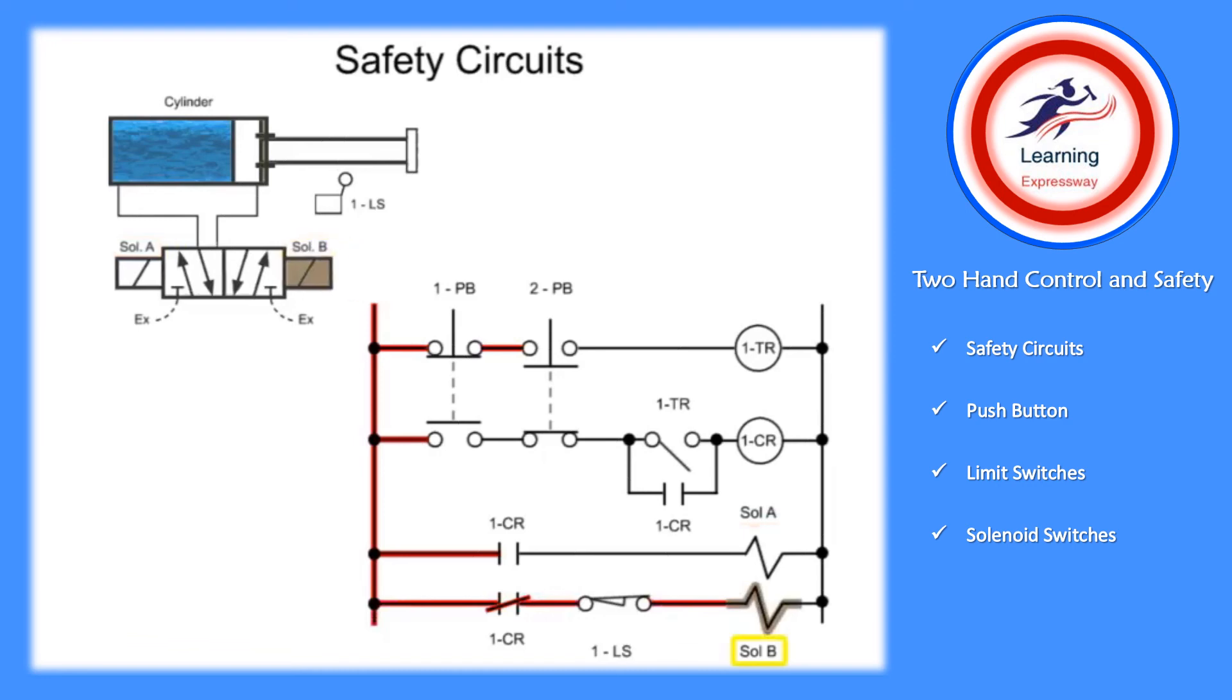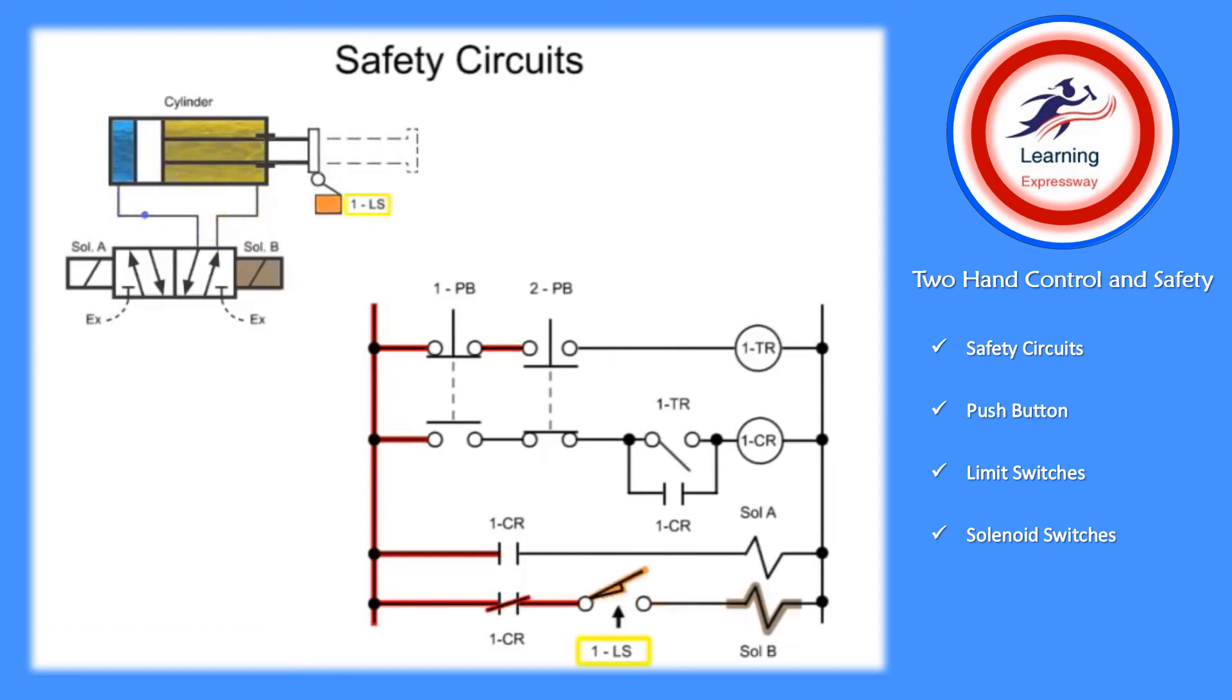This shifts the valve, allowing the rod end of the cylinder to fill with fluid and retract the cam. When the cylinder is fully retracted, the cam energizes and opens limit switch 1, which removes power from solenoid B.